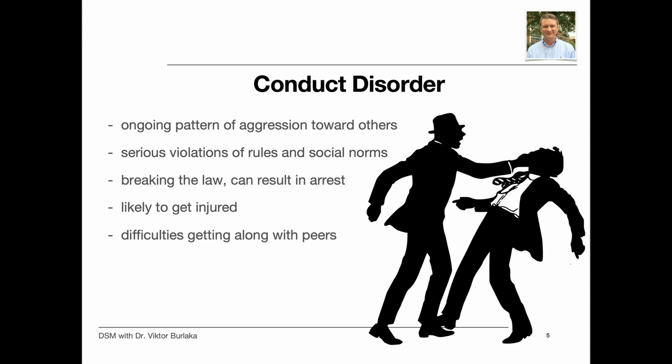Conduct disorder (CD) is diagnosed when children show an ongoing pattern of aggression toward others and serious violations of rules and social norms at home, in school, and with peers. These rule violations may involve breaking the law and result in arrest. Children with CD are more likely to get injured and may have difficulties getting along with peers. Examples of CD behaviors include breaking serious rules such as running away, staying out at night when told not to, or skipping school; being aggressive in ways that cause harm such as bullying, fighting, or being cruel to animals; and lying, stealing, or damaging other people's property on purpose.